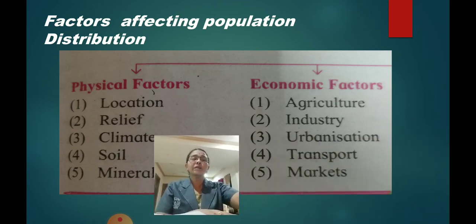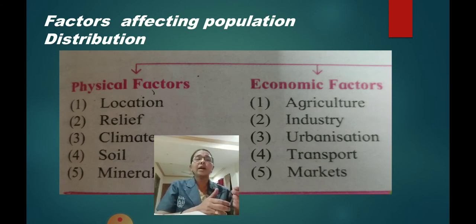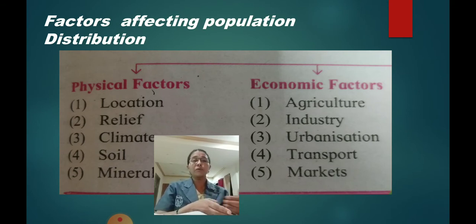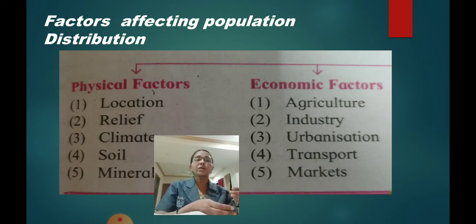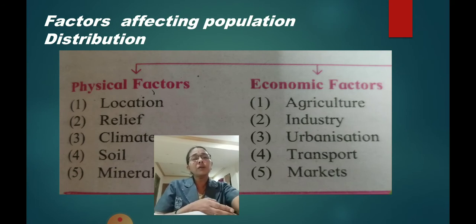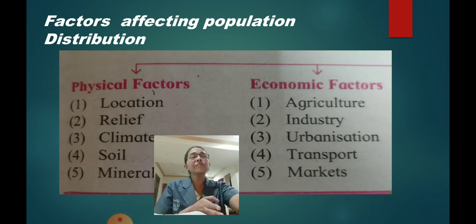The next is economic factors — factors by which you can earn money and live. Nowadays you require money to satisfy all your basic needs. If agriculture is done properly, industries are there, urbanization — if cities are more and facilities provided are good, if transport systems are good with roads, railways, airports, and good market facilities, people like to live in these places and population is more. If these factors are not proper, population is less dense.